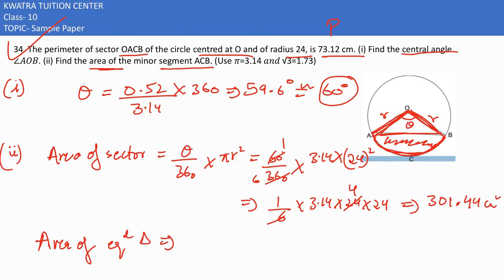Now area of triangle minus this. This is an equilateral triangle. Why? Because it is 60 degrees and we have opposite sides equal.